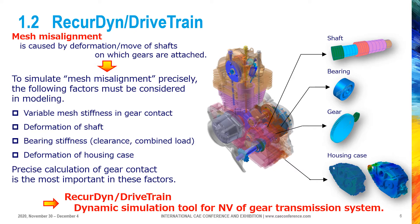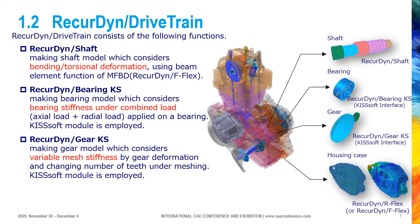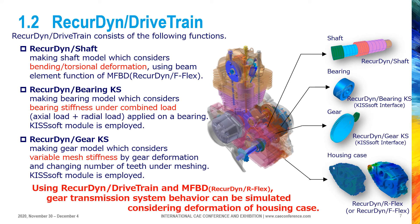For this purpose, FunctionBay has developed a new solution named Ricardine drivetrain for NV of the gear transmission system. Ricardine drivetrain consists of the following functions. Ricardine Shaft can build a shaft model which considers bending and torsional deformation using beam elements, which is a general function of Ricardine for flexible body modeling. Ricardine Bearing KS can build a bearing model which considers bearing stiffness and combined axial and radial load applied on a bearing. KitSoft module is integrated in this function.